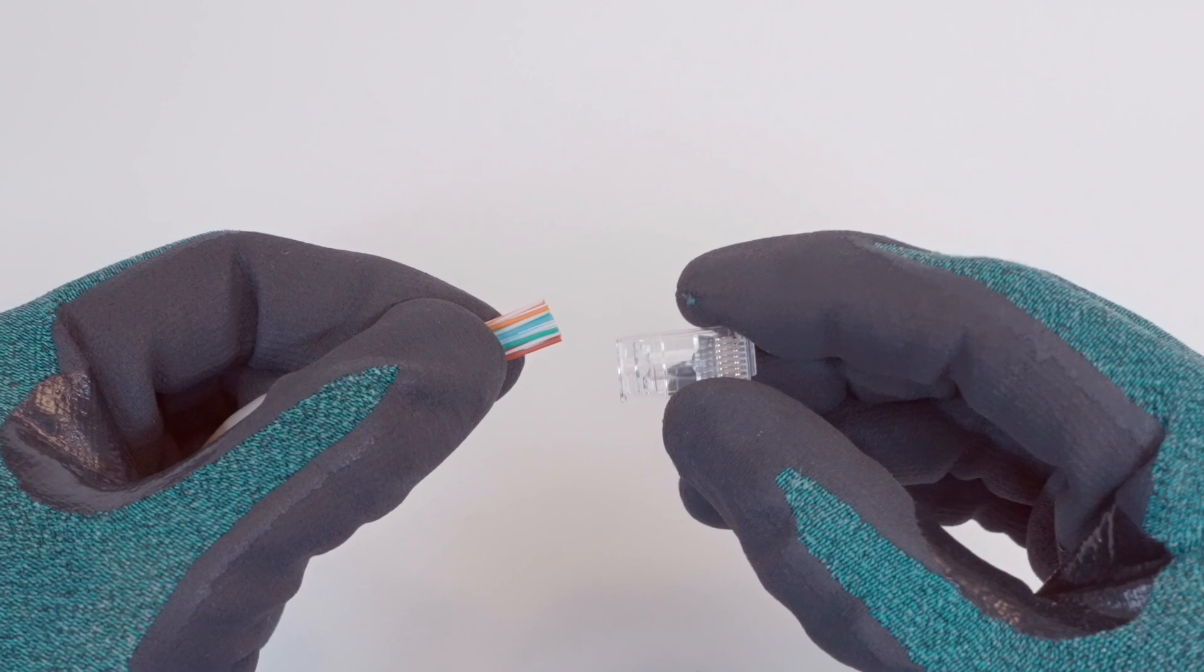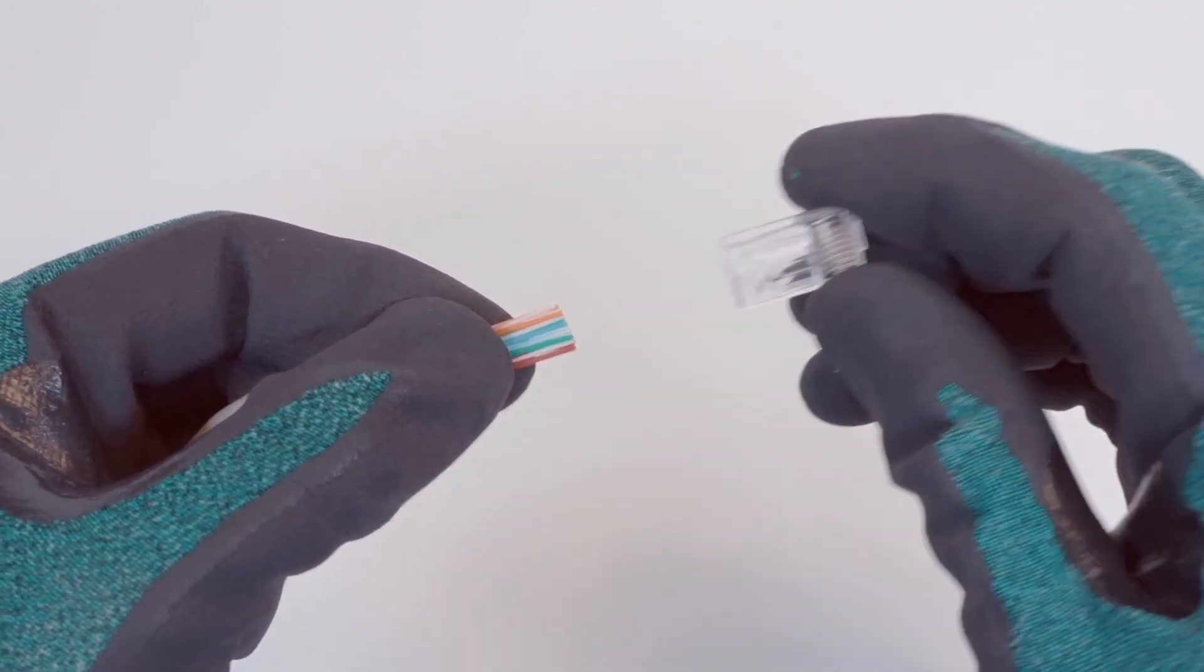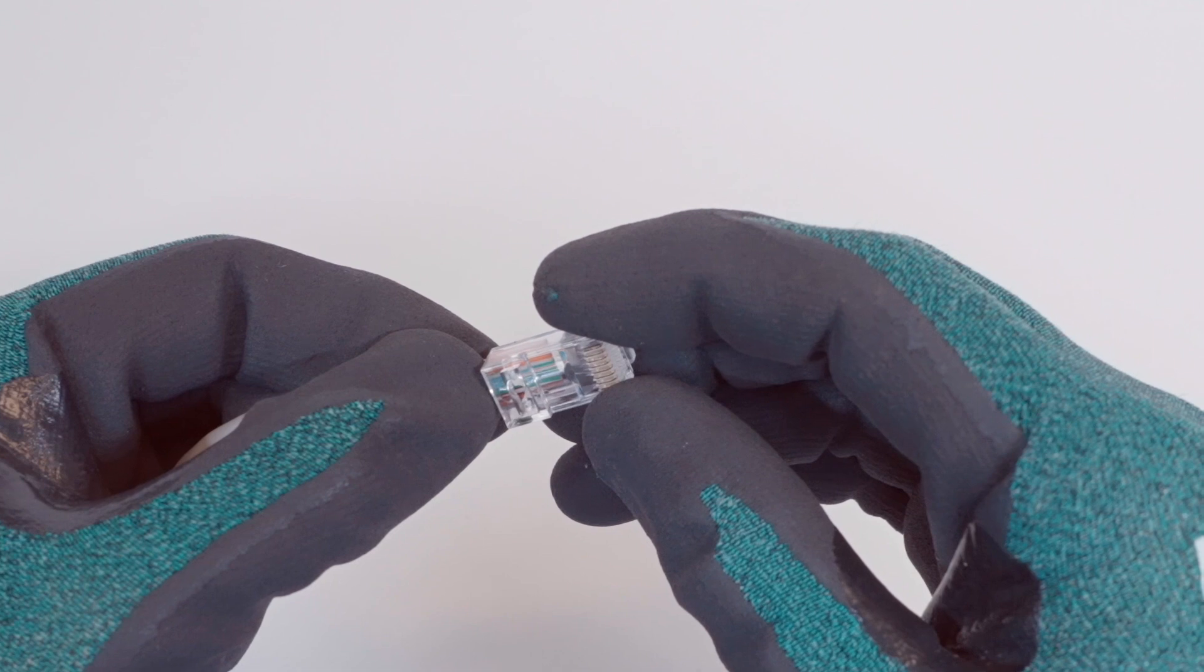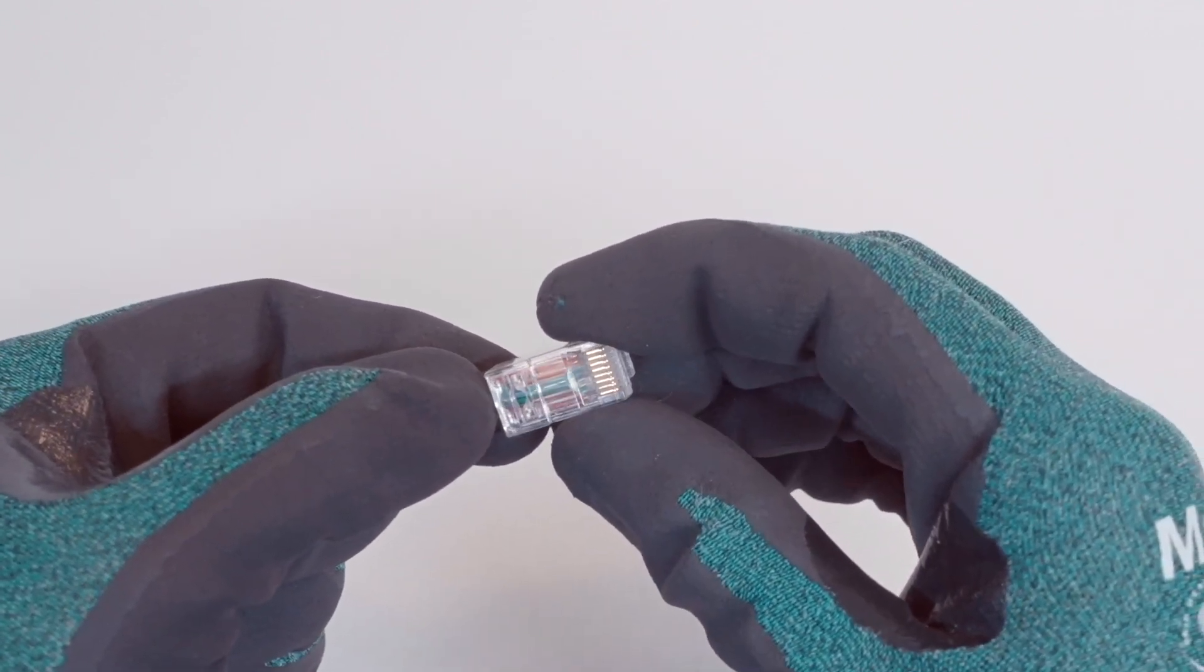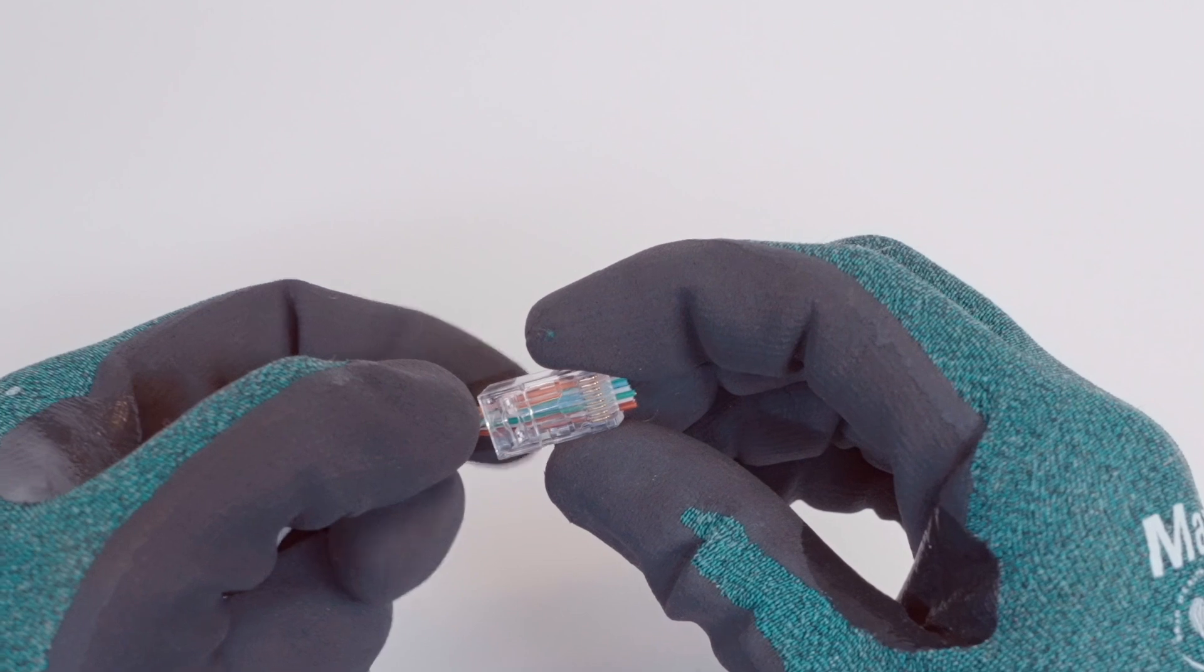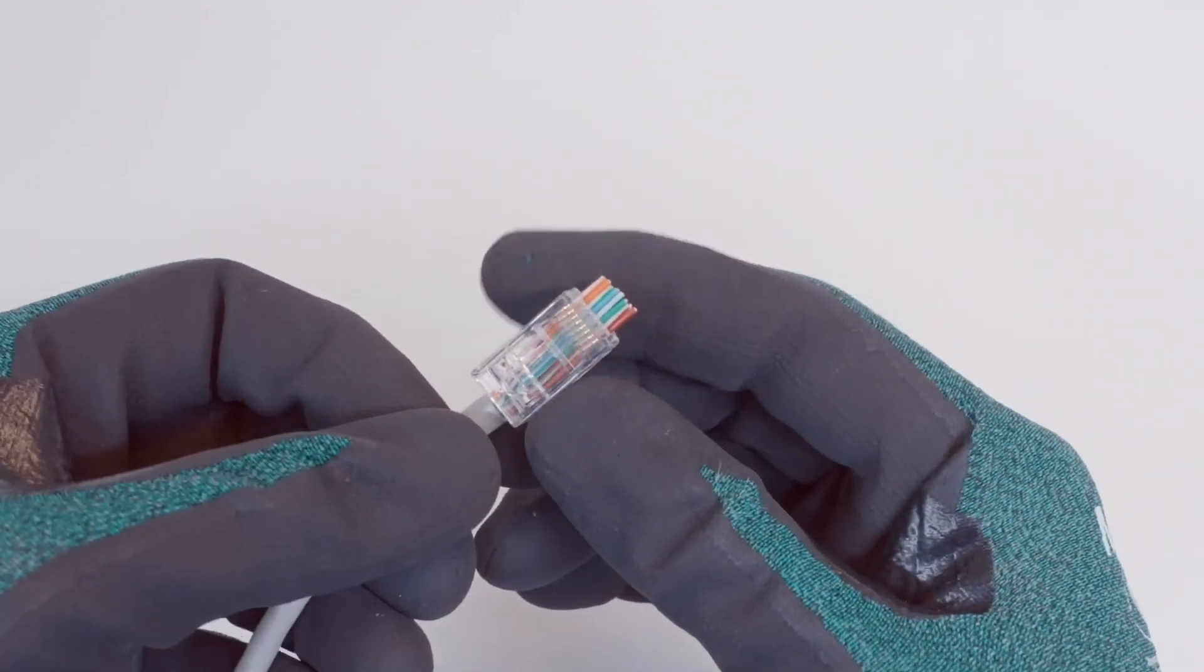Grab an RJ45 plug and hold it so the gold pins are visible. Insert all eight wires into the end of the plug. As the wires pass through their respective channels inside of the plug, they will continue to pass through the end of the plug. If there is resistance or if any wires get stuck while passing through, pull the wires out, cut a clean end, and try again.